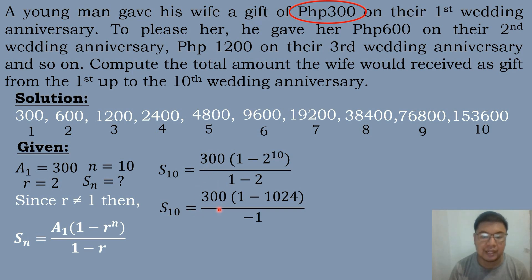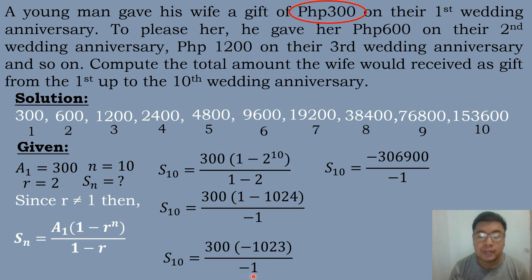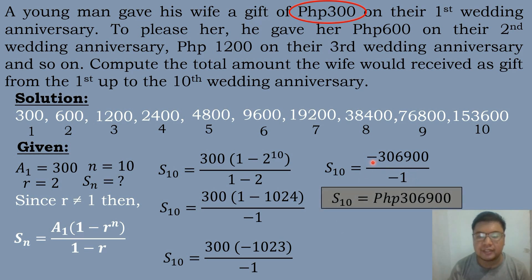Simplifying: S sub 10 equals 300 times quantity 1 minus 1,024 over negative 1. 1 minus 1,024 is negative 1,023. So 300 times negative 1,023 equals negative 306,900, divided by negative 1 equals 306,900. The total amount the wife receives from the first to the 10th anniversary is 306,900 pesos.